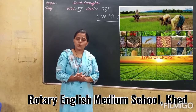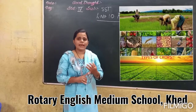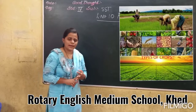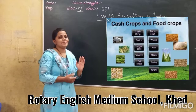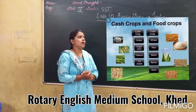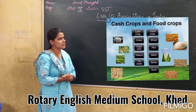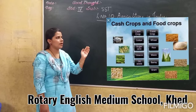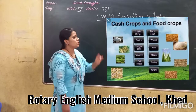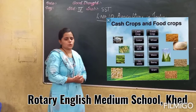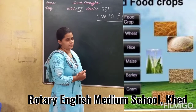To grow the crops, the soil should be fertile with good rain and good climate conditions. Now, in India there are two types of crops — that is food crop and cash crop. Today we are going to learn about food crops.